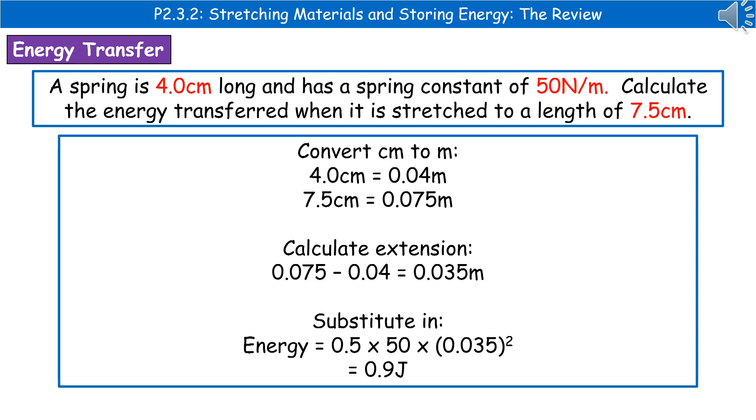So we need to convert those centimeters to meters by dividing by 100 first of all. So 4cm becomes 0.04 meters, and 7.5cm becomes 0.075 meters.